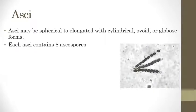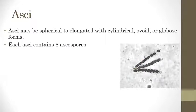Before that, we will see what the ascus is. It is a spherical, elongated, cylindrical, oval, or globose form. The ascus is a structure that bears ascospores. This long structure is called the ascus. It contains 8 ascospores — the light brown to black structures packed inside the ascus.